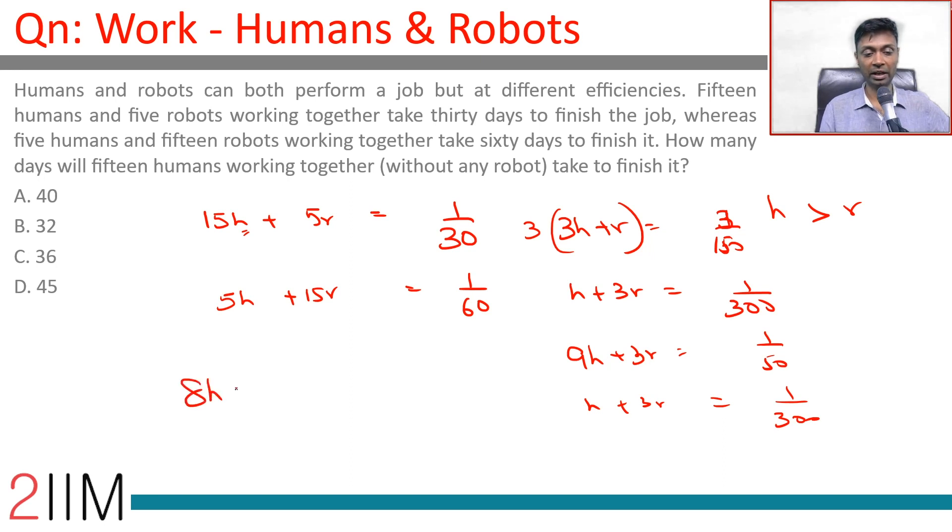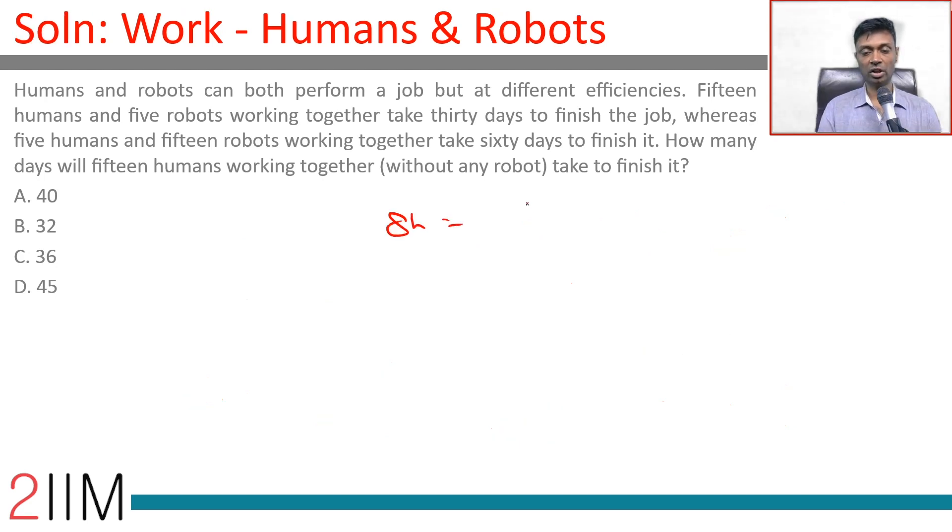8h = 1/50 - 1/300, or 6/300 - 1/300, which is 5/300 or 1/60. 8h = 1/60. h = 1/(60×8).